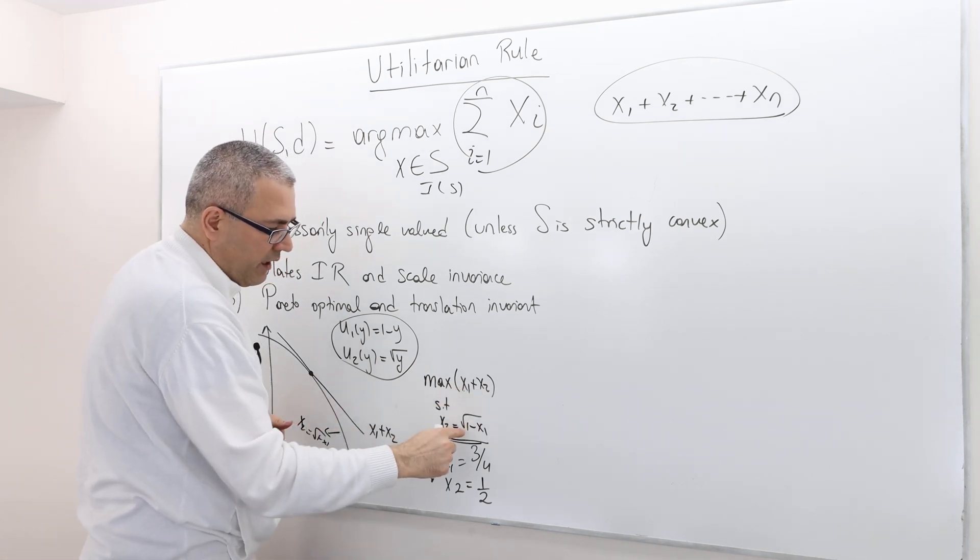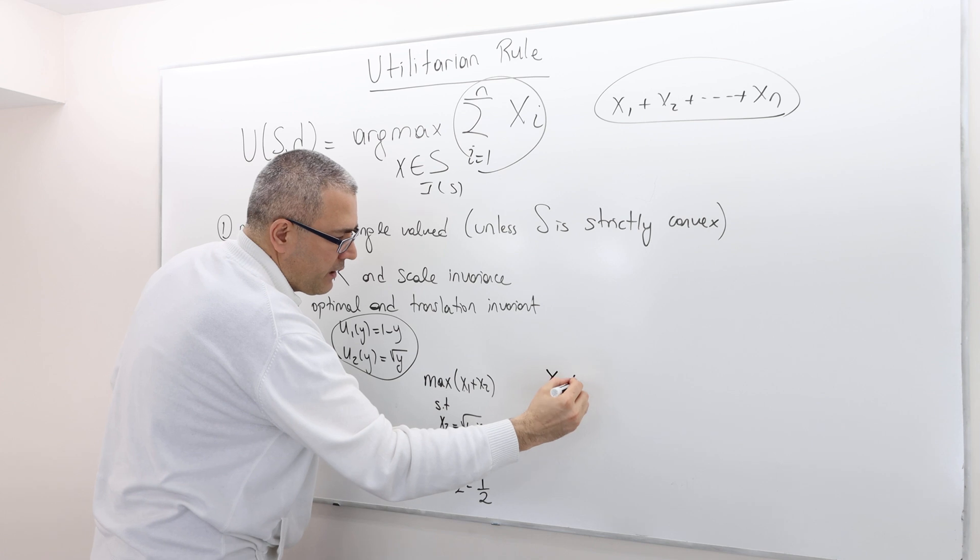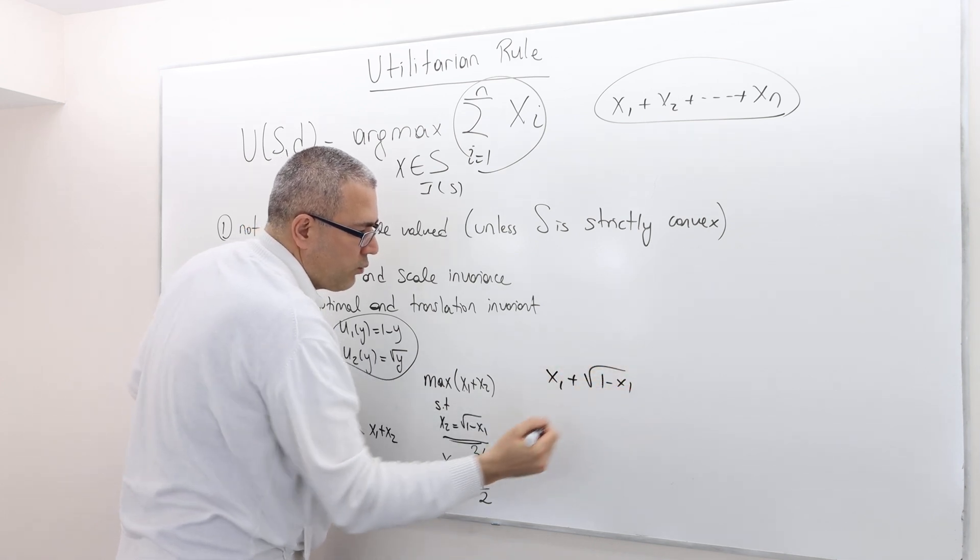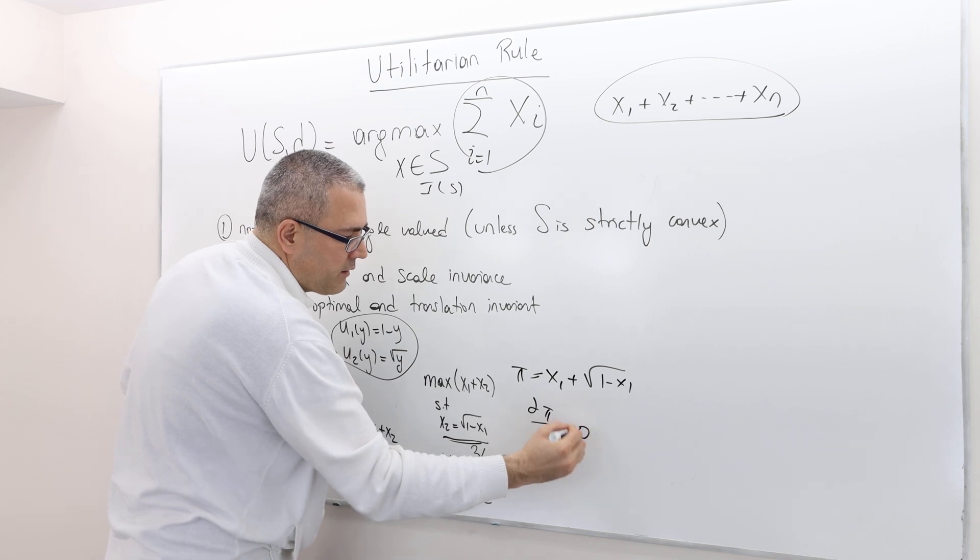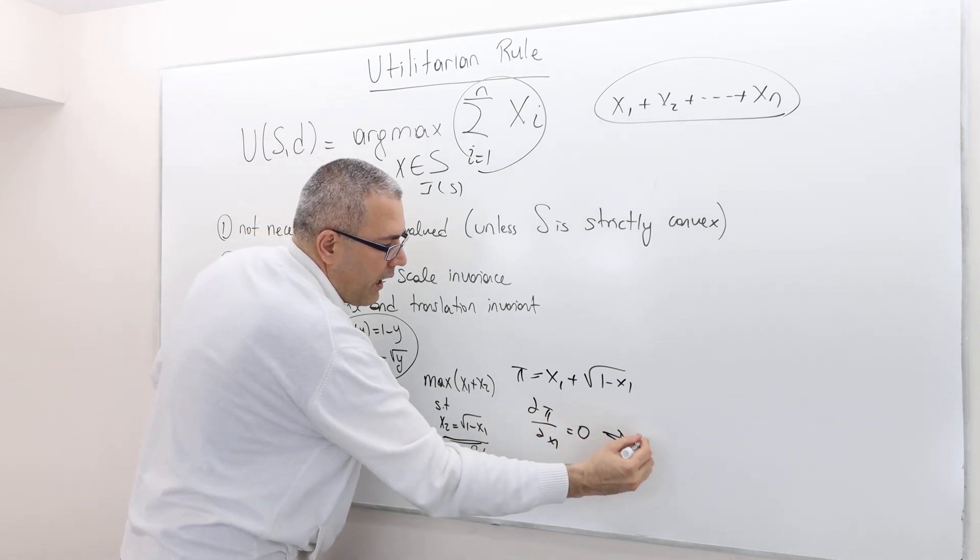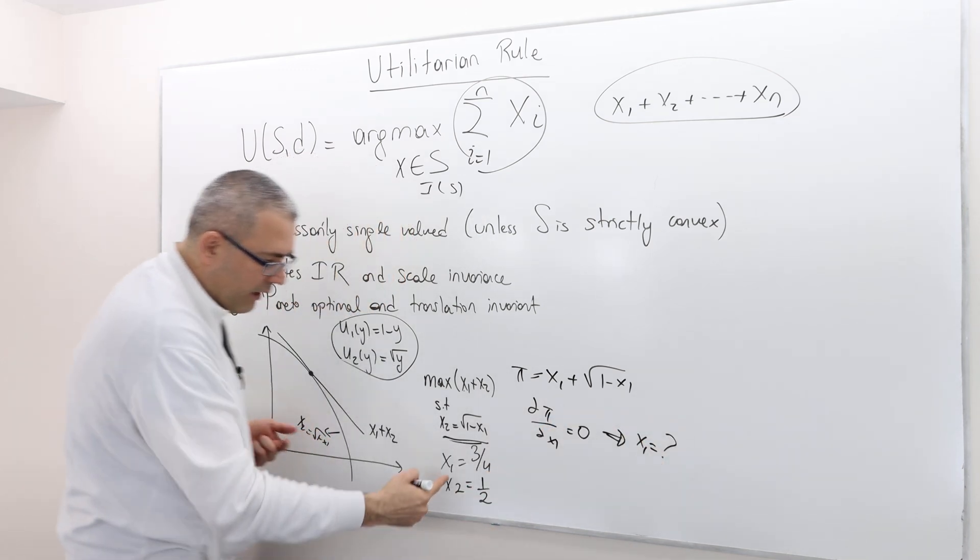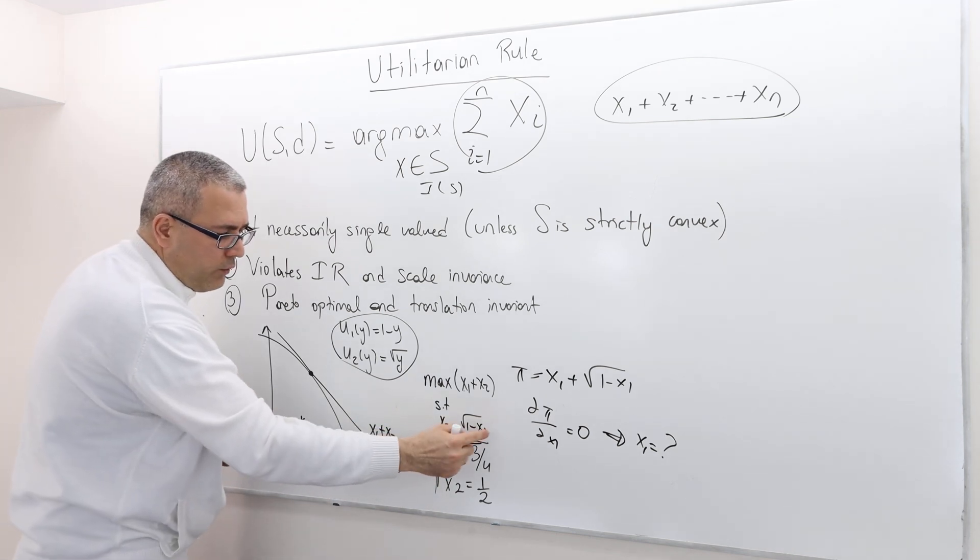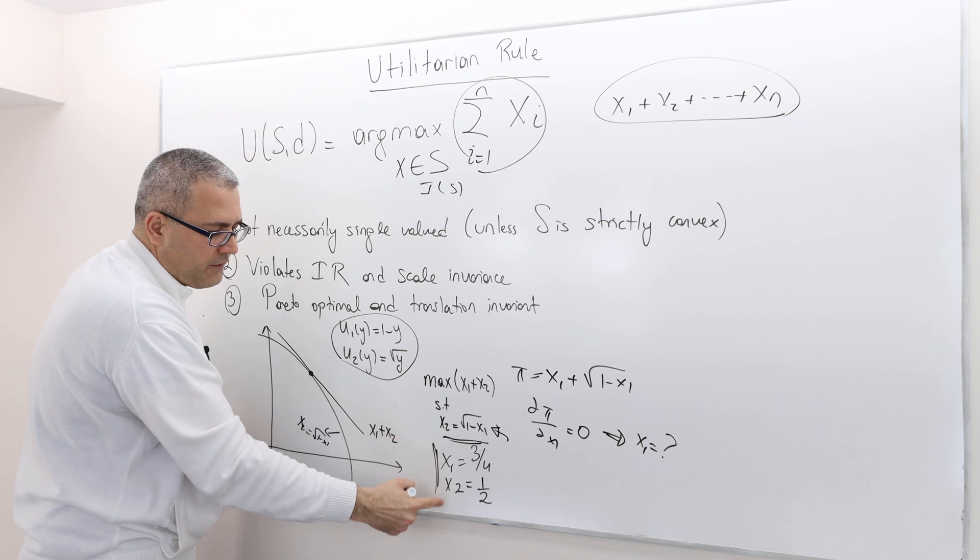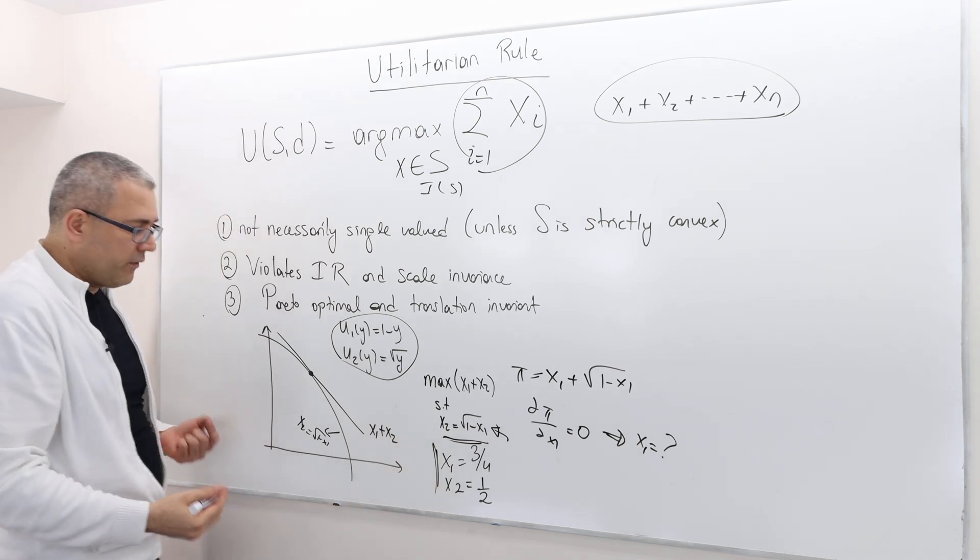Instead of x2, just write x1. So it becomes x1 plus square root of 1 minus x1. Call it π, take the derivative with respect to x1, set it equal to 0, and solve for x1. If you do that, x1 is going to be 3/4. And when you plug it back here, x2 is going to be 1/2.